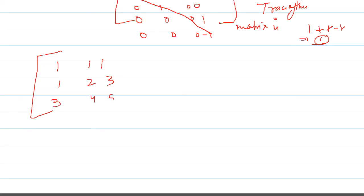This is the diagonal, so this is 5 plus 2 plus 1, so it is 8. So 8 is the trace of this matrix.